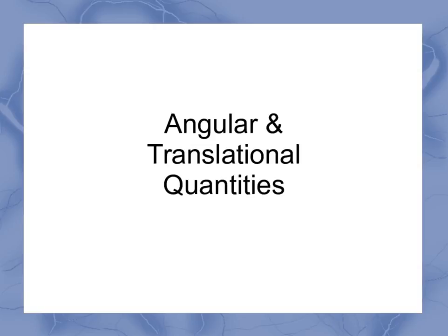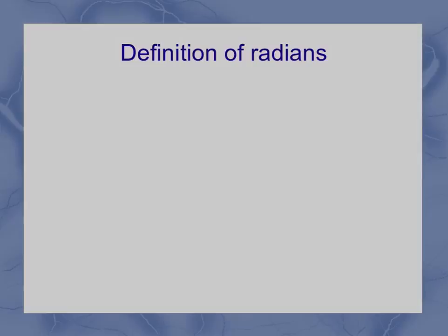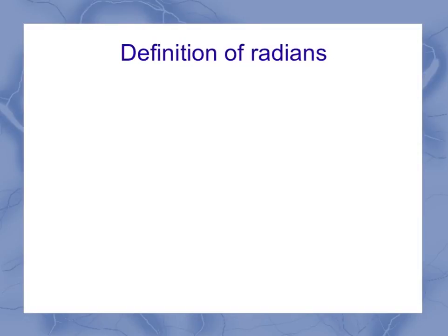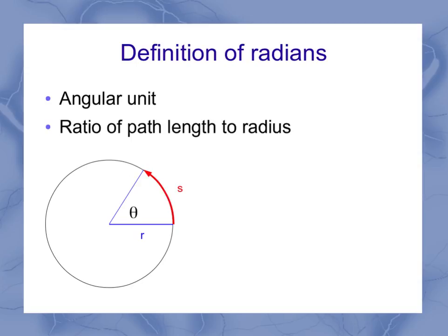Now we can look at angular and translational quantities. And we're going to start by reminding ourselves of the definition of radians. It was an angular unit, where it was defined as the ratio of the path length to the radius of my circle.